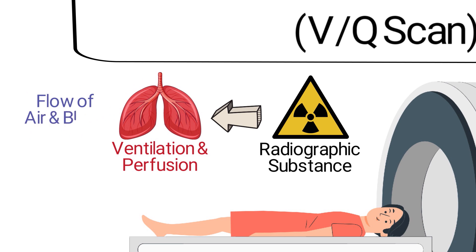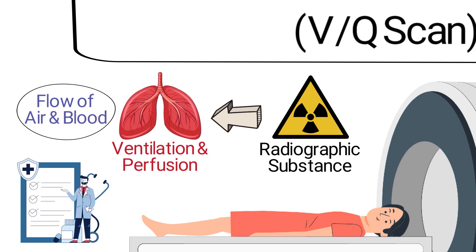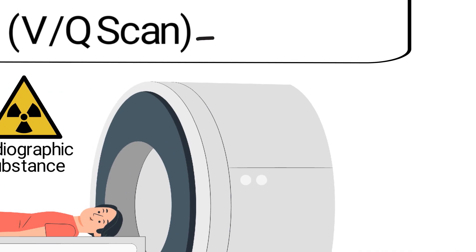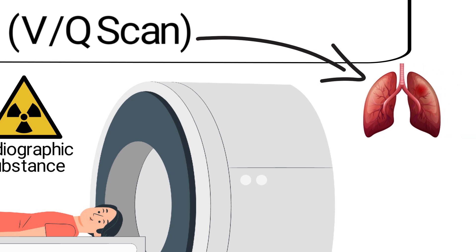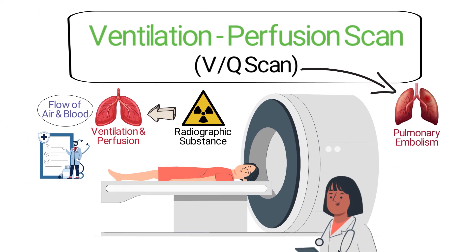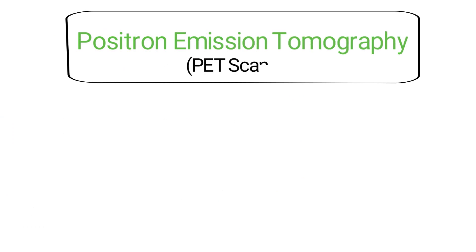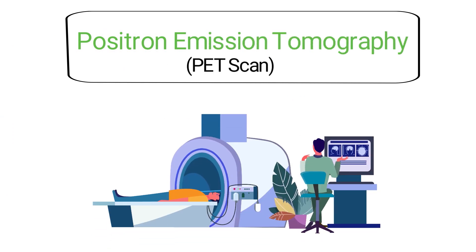By measuring the flow of air and blood within the lungs, a ventilation-perfusion scan allows for the diagnosis of various diseases. A VQ scan is typically indicated to help diagnose or rule out a pulmonary embolism. It can also help physicians examine the lungs of pre-operative patients.